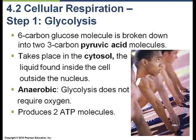We chop that glucose in half and now we have two 3-carbon pyruvic acid molecules. This takes place in the cytosol — the watery portion of the cell found outside the organelles and nucleus but inside the plasma membrane. Glycolysis is interestingly anaerobic; it does not require oxygen. And it does produce some ATP — specifically two ATP molecules.